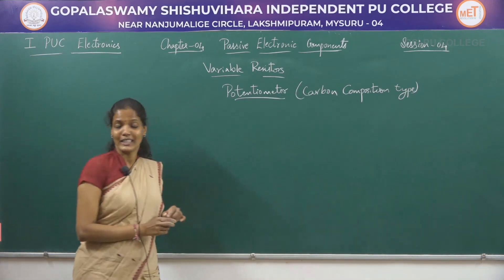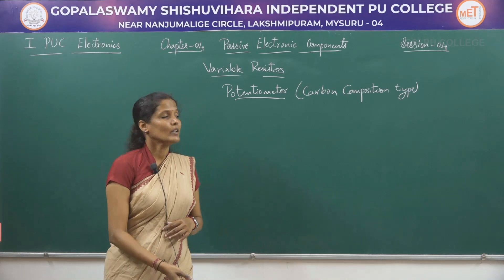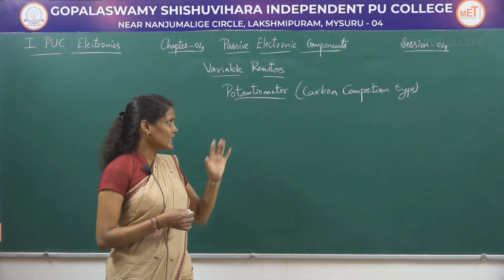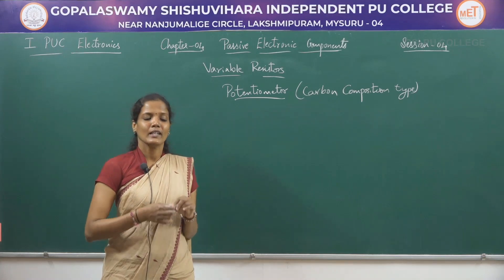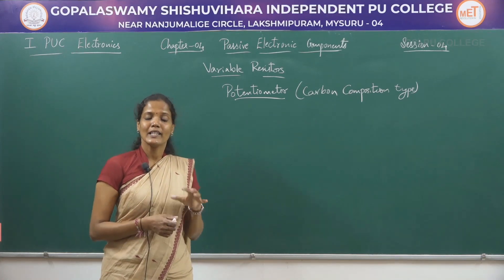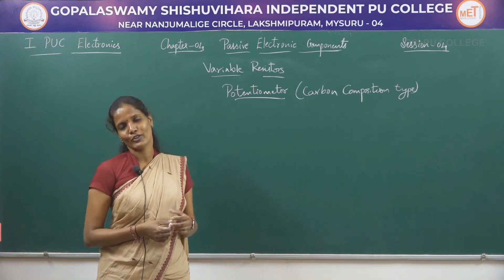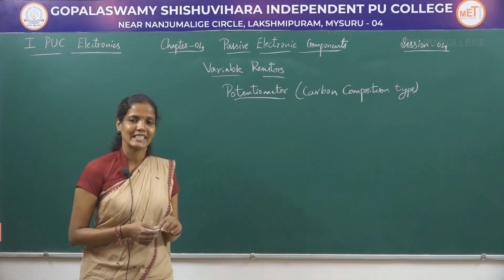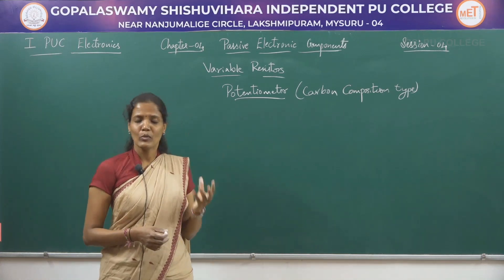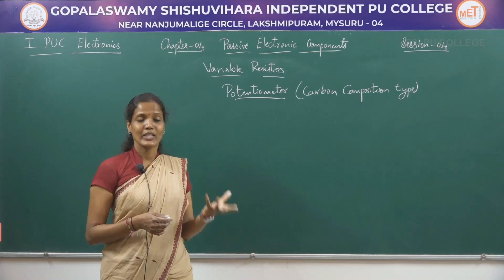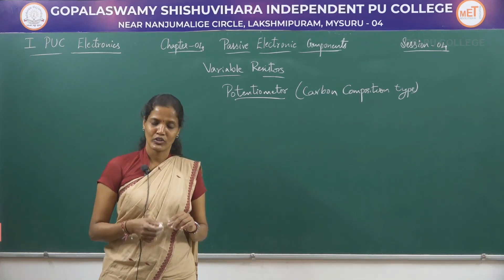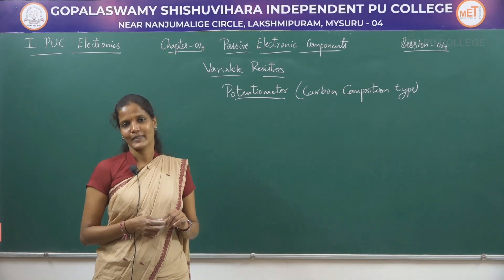This potentiometer is also called as the carbon composition type because we are going to use carbon as the material. Depending upon the material used to construct these resistors, we name the resistor. Since carbon is the most important particle used in this potentiometer, it is also called as the carbon composition type of resistor.